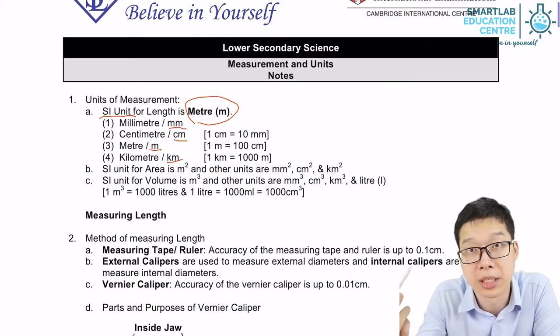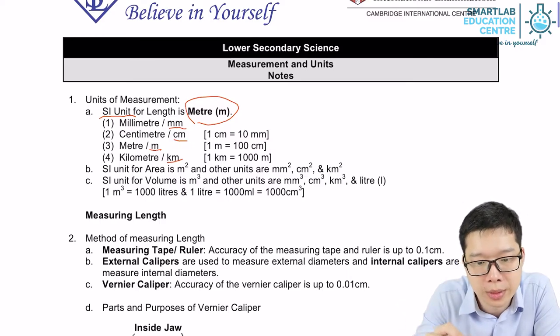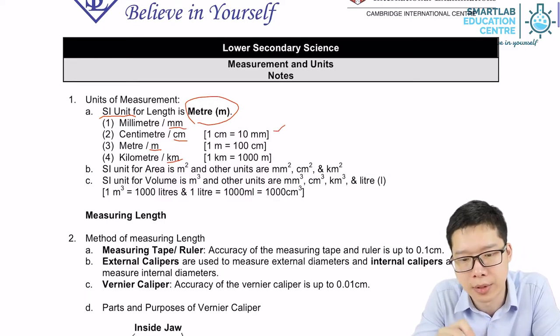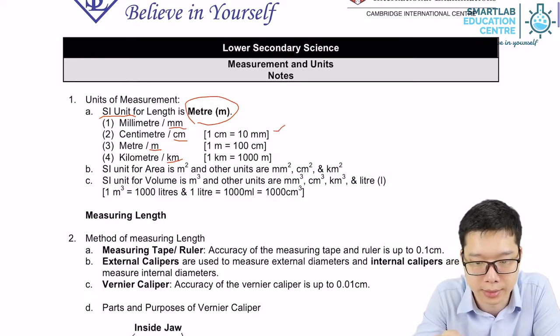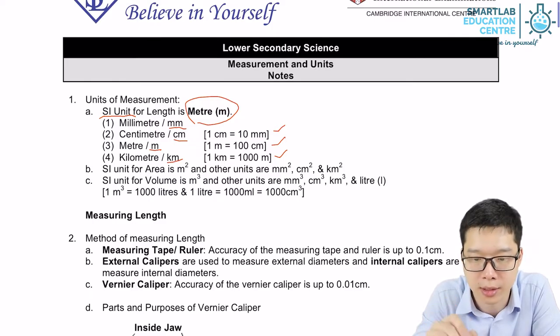mm stands for millimeter. So as stated over here, 1 cm equals 10 mm. And similarly, 1 meter equals 100 cm. So on and so forth, 1 kilometer equals 1000 meters.